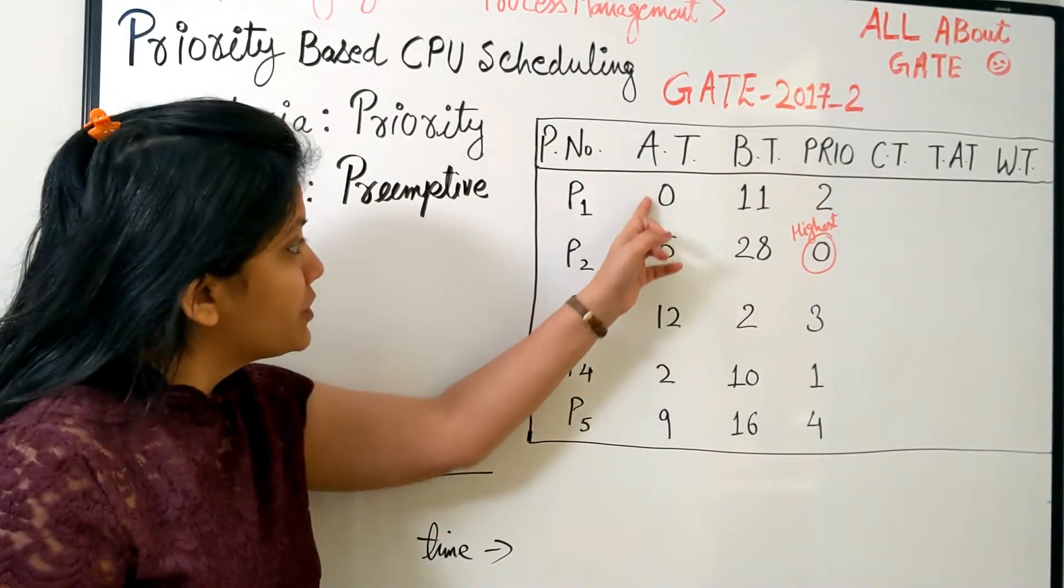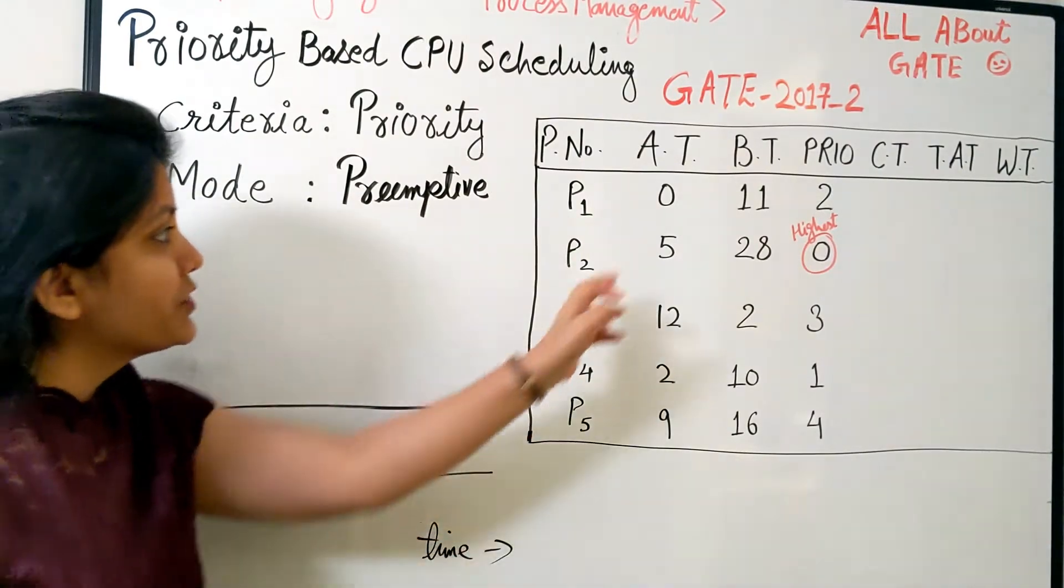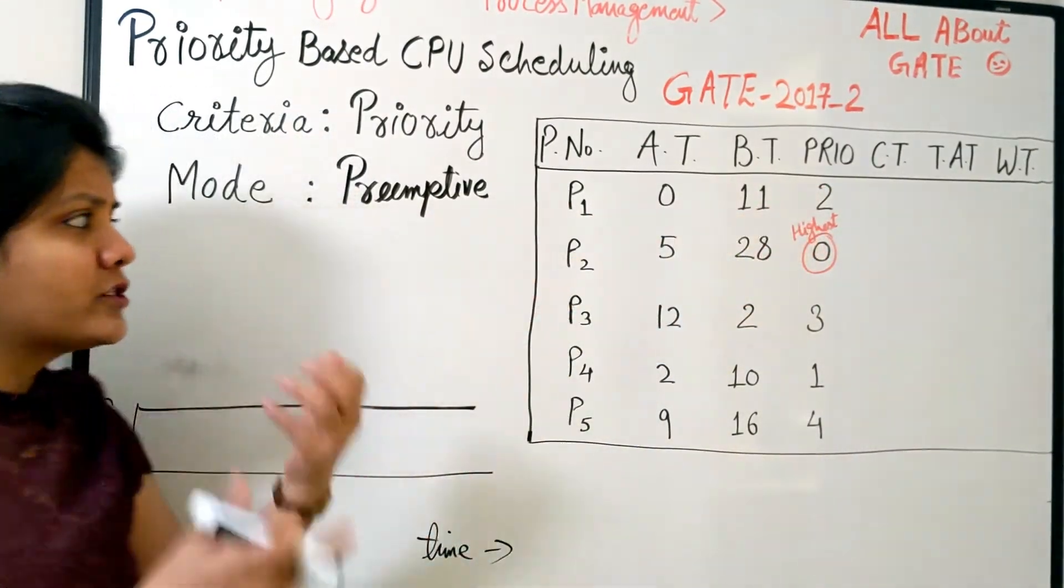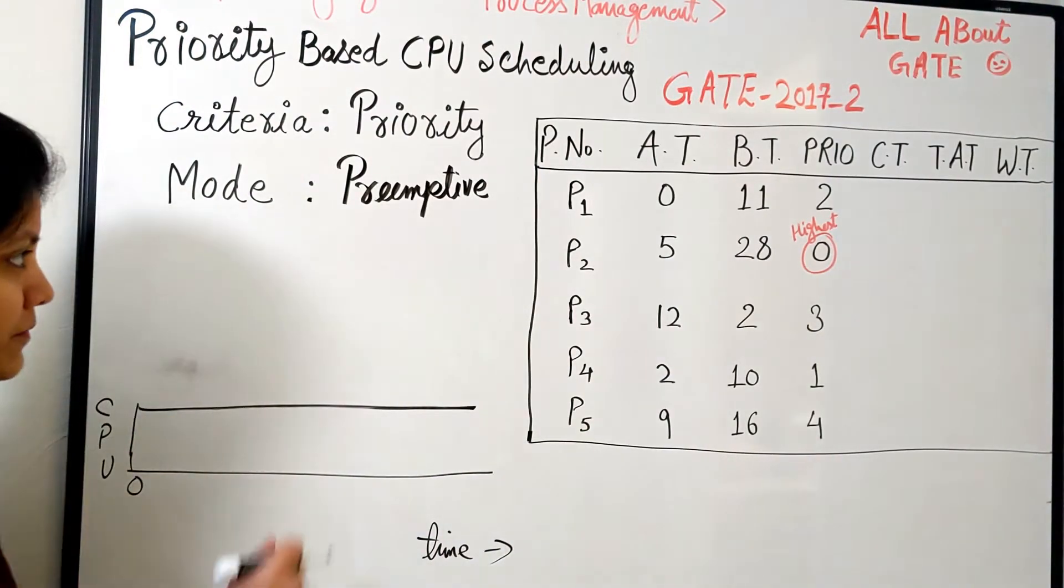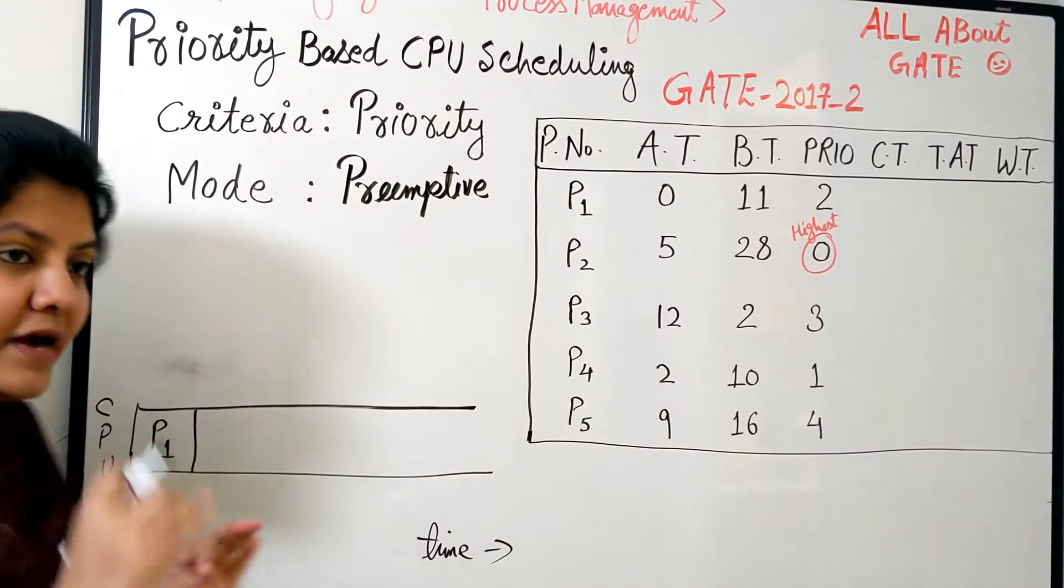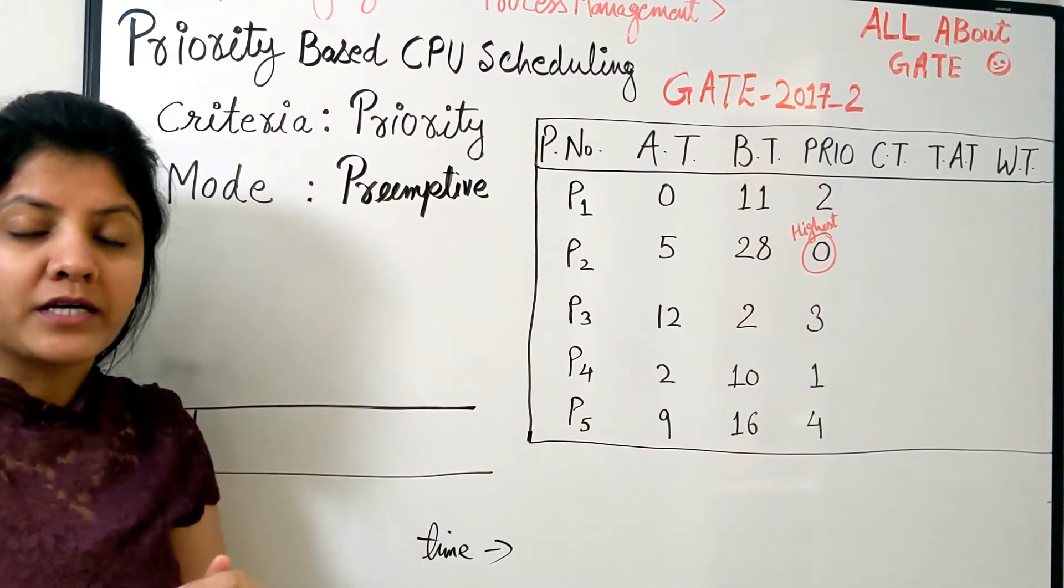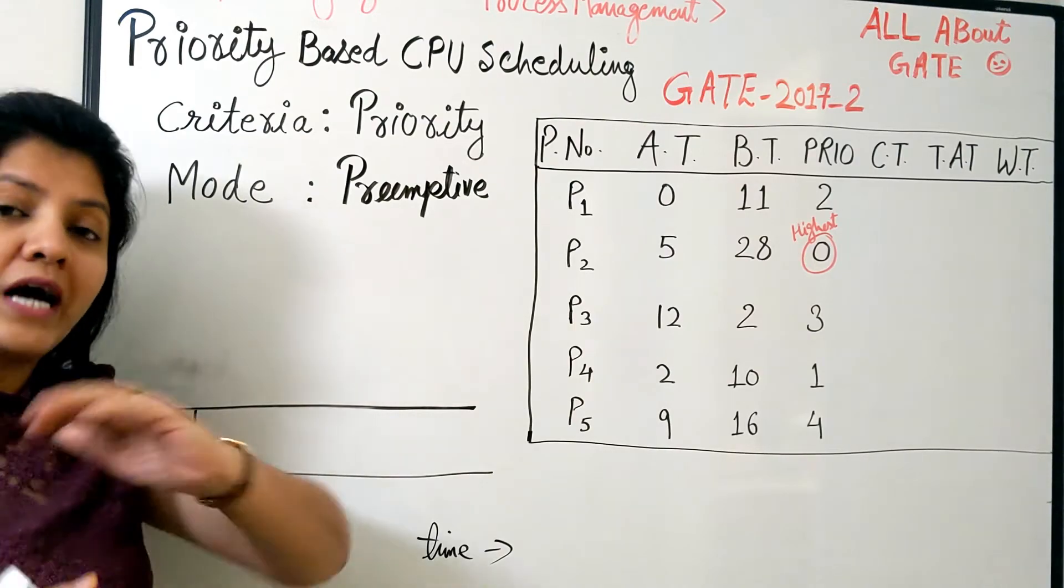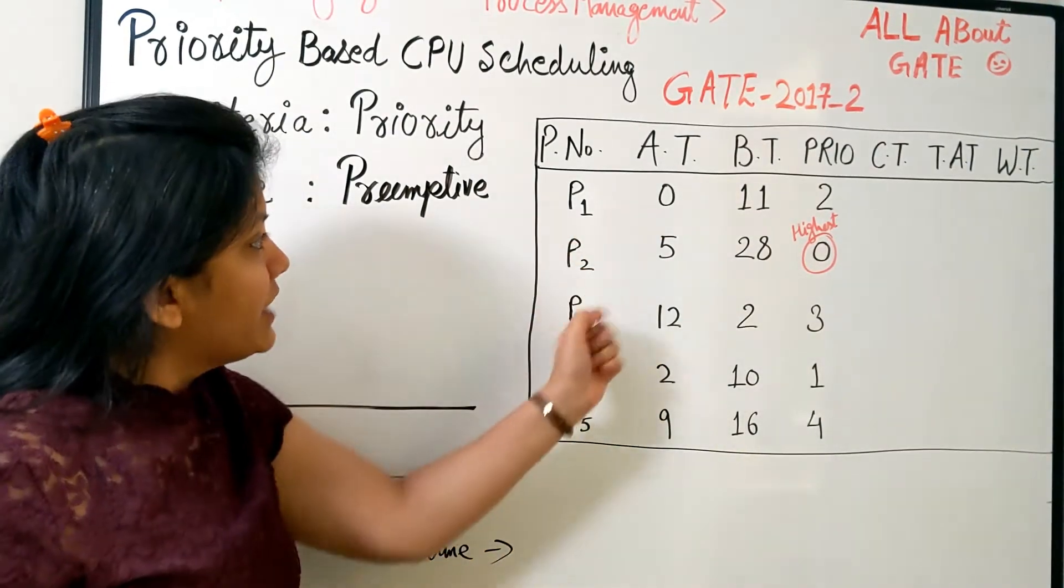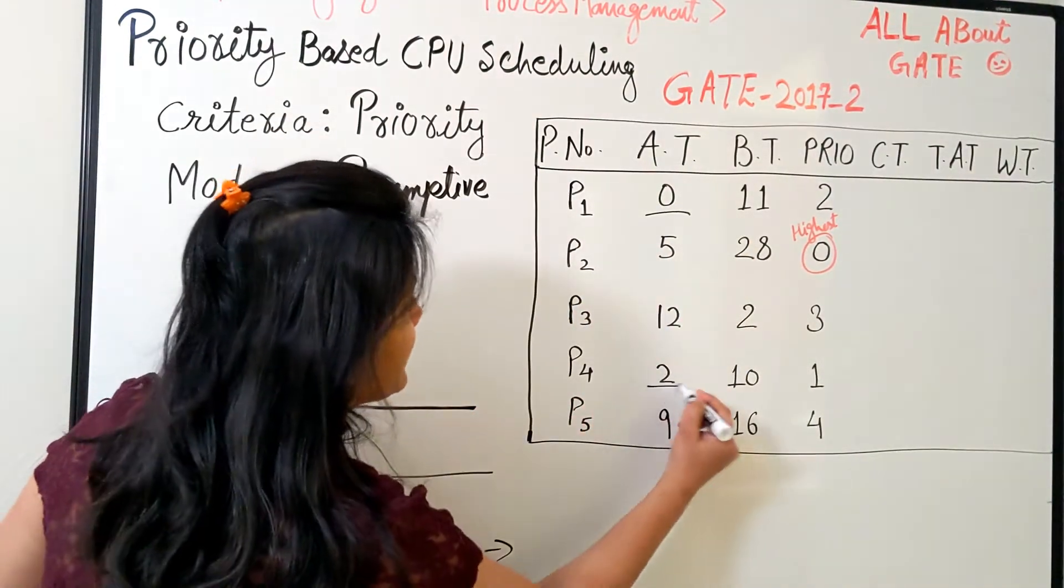At time zero, this is going to show your CPU status on the time scale. First of all at time zero, just look at the process which is available in your system. At time zero, we just have one process, P1, so we have no clash. We just have to pick this and schedule it, no matter what its priority is because there is no multiple process. Let's take P1 and schedule it.